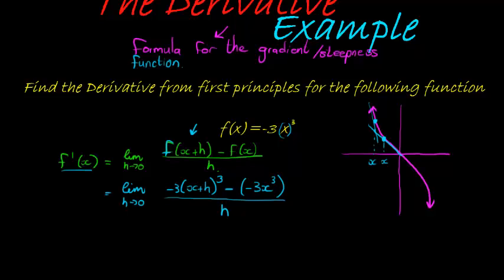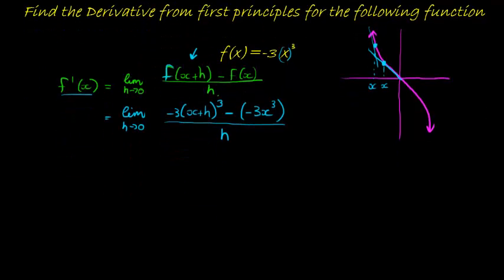Am I allowed to substitute? Of course not. h equal to 0 will make my denominator equal to 0. So I'm not allowed to substitute. So I first have to simplify. So we have the limit of h tending to 0, which I must write until I get to substitute.